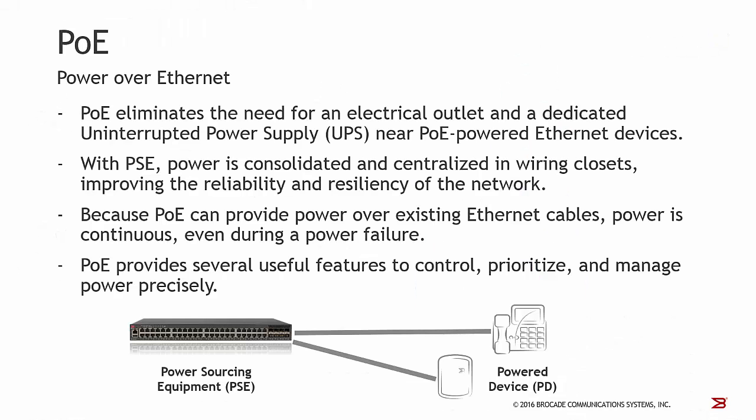Power over Ethernet eliminates the need for an electrical outlet and a dedicated power supply near PoE-powered Ethernet devices. With power sourcing equipment, power is consolidated and centralized in wiring closets, improving the reliability and resiliency of the network. Because PoE can provide power over existing Ethernet cables, power is continuous even during a possible power failure. PoE provides several useful features to control, prioritize, and manage power precisely.